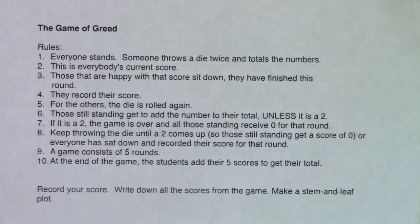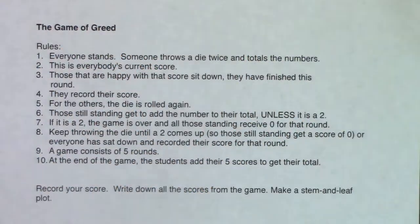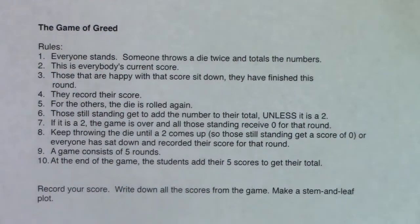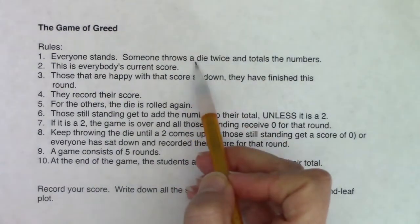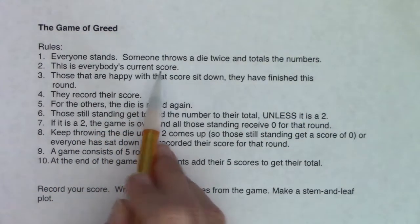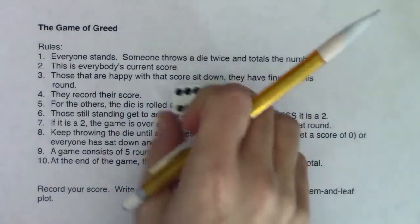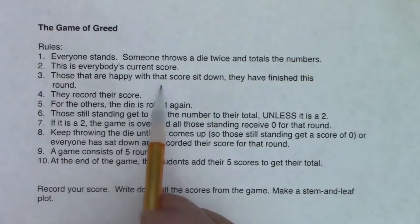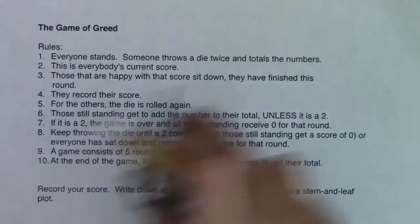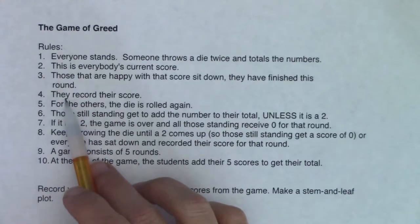So in a moment, I'm going to have everyone stand. And you can't see me doing little air quotes by everyone. I'm going to have my three little toys stand up. I'll show you what I mean. I'm going to throw a dice twice and total the numbers. And that will be everybody's current score. So I'm going to roll this die twice, whatever pops up. I will add those two numbers together and that will be our starting score. If any student, any of my three little students are happy with that score, they will sit down, they've finished this round and they will record their score.